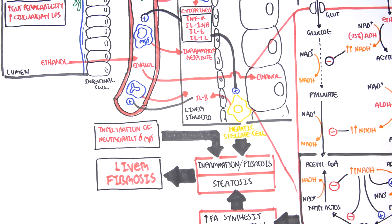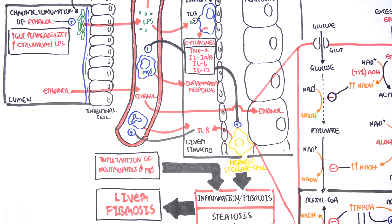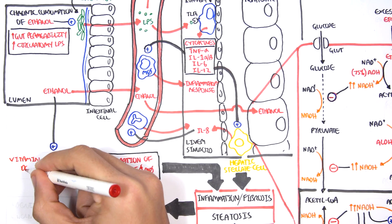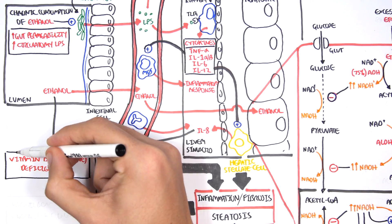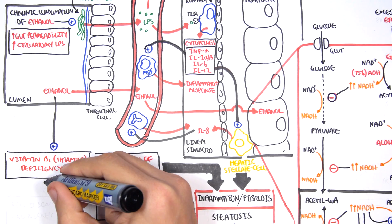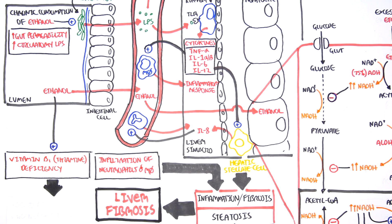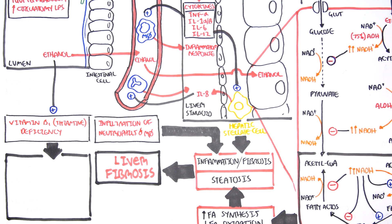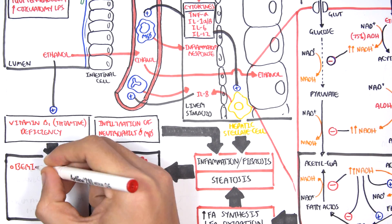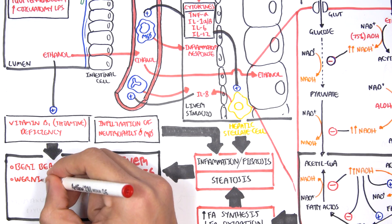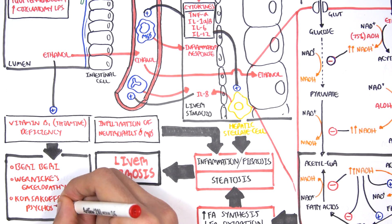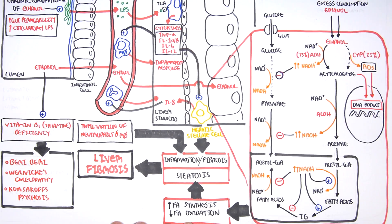Excessive ethanol intake not only affects the liver, but also affects our neurological system. For example, excessive ethanol intake can lead to vitamin B1 deficiency - vitamin B1 is known as thiamine deficiency. Thiamine is very important for our body because it is responsible for a lot of metabolic pathways. Thiamine deficiency results in three things: it can result in a condition known as beriberi, Wernicke's encephalopathy - basically neurological pathology - and also Korsakoff's psychosis, which is essentially memory loss. I hope you enjoyed this video on the physiology of alcohol. Thank you for watching.